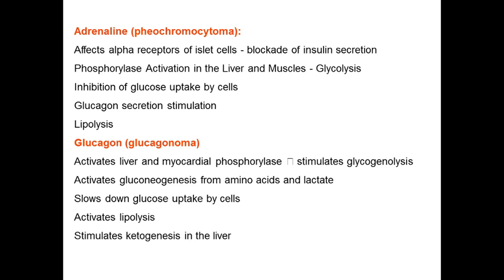I'd like to explain why increasing or decreasing some kinds of hormones can result in hyperglycemia, not only deficiency of insulin. For example, in pheochromocytoma, we have excess production of epinephrine and norepinephrine, which is adrenaline. Epinephrine and norepinephrine can blockade insulin secretion, increase glycolysis, inhibit glucose uptake by cells, stimulate glucose secretion, and also cause over-destroying of lipids, resulting in hyperglycemia. All conditions which can increase epinephrine or norepinephrine production - for example by tumor or any stressful conditions - result in hyperglycemia syndrome.